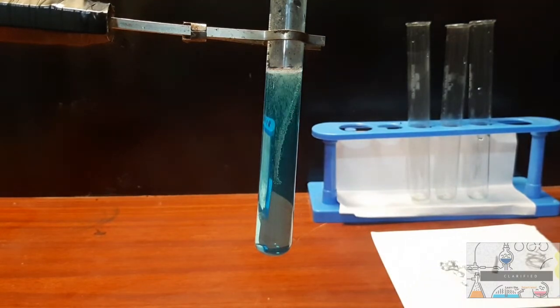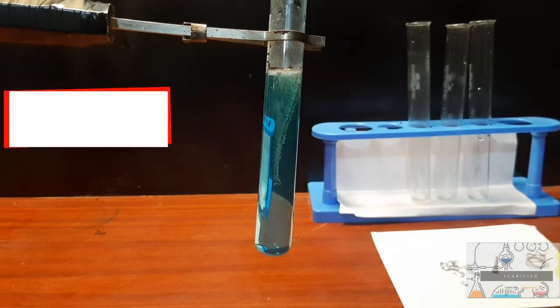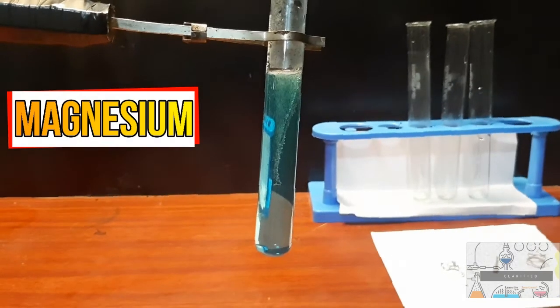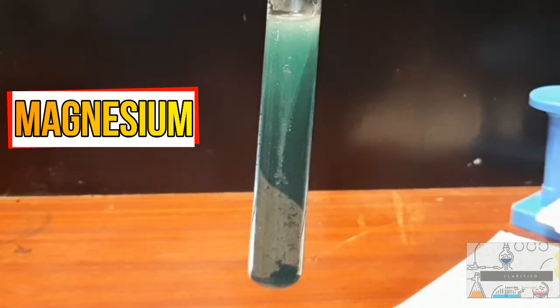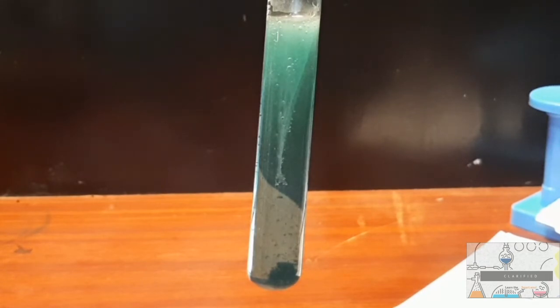As you can see, magnesium reacts readily with the copper sulfate. We can observe a gas being released as the magnesium strip reacts with the solution. Can you see the reddish brown particles forming around the magnesium strip and precipitating in the test tube? Stick around and you will find out what it is.